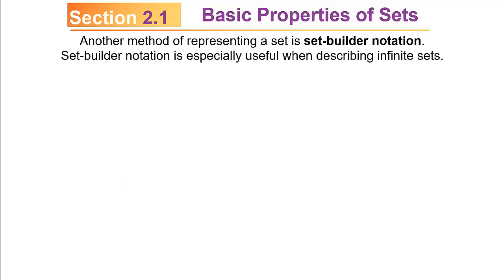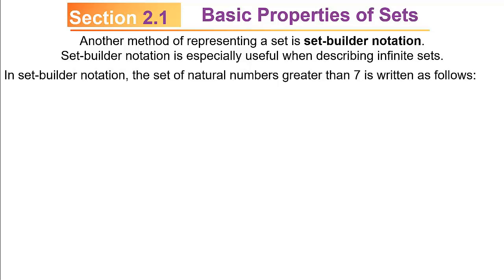Earlier I mentioned two common methods of writing sets — in words or using the roster method. There's actually a third method, which is a combination of the two, called set builder notation. Set builder notation is especially useful when describing infinite sets or things that are hard to write out. In set builder notation, the set of natural numbers greater than 7 is written with braces, then x, a vertical line, followed by x is an element of N and x is greater than 7.